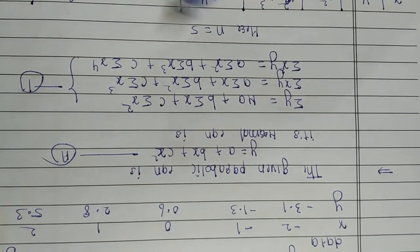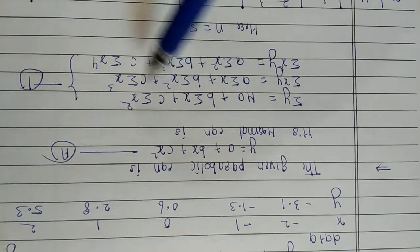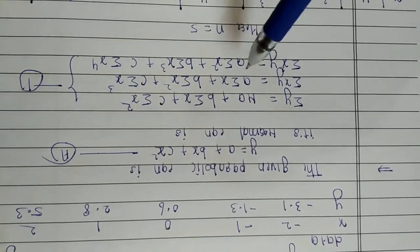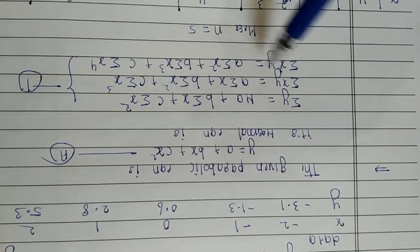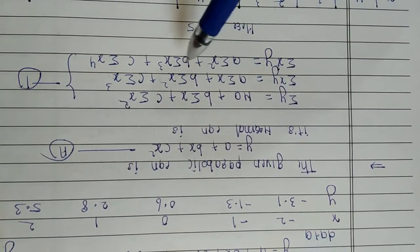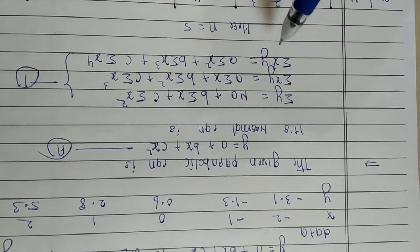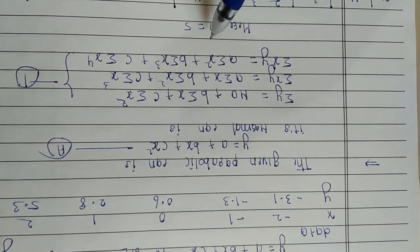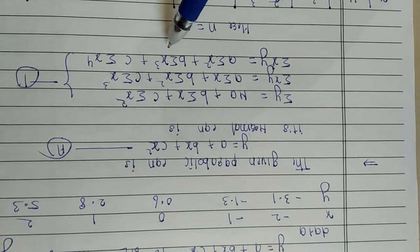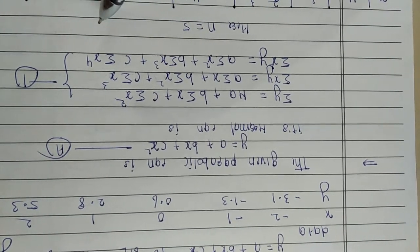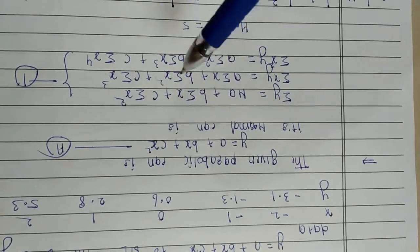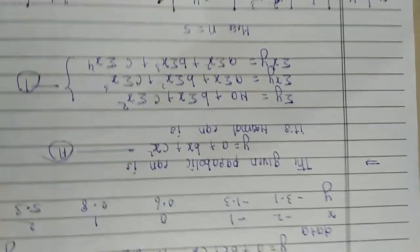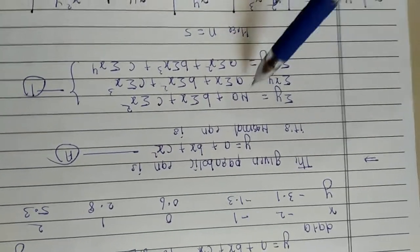So, we need to find the values of: Σx, Σx², Σxy, Σx²y, Σx³, and Σx⁴. For this, we will prepare a table. Here n means the number of rows, that is the number of x values, which is 5.